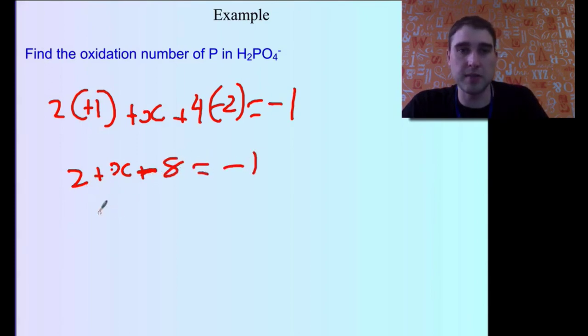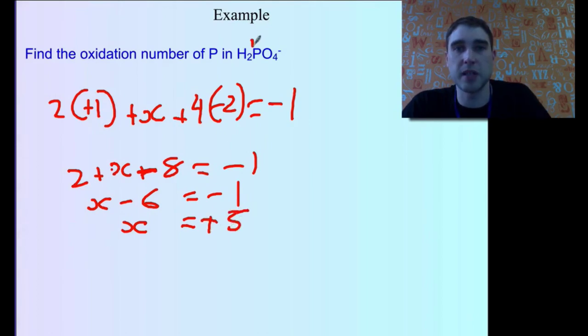So 2 minus 8 is minus 6 again. So X minus 6 equals minus 1. So X equals plus 5. So the oxidation number of phosphorus there is plus 5. So we write that on top.